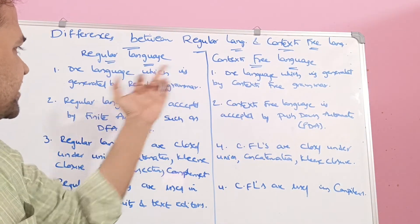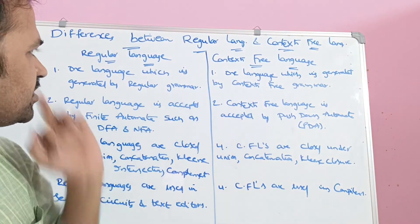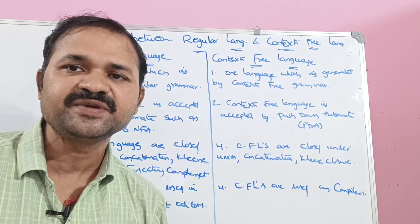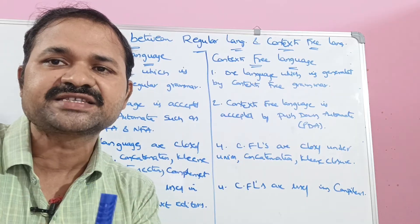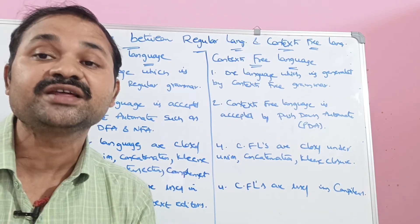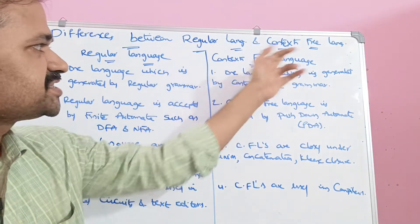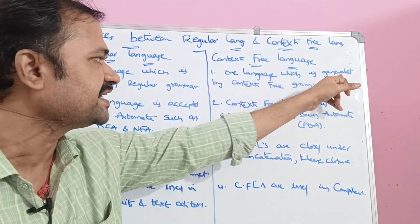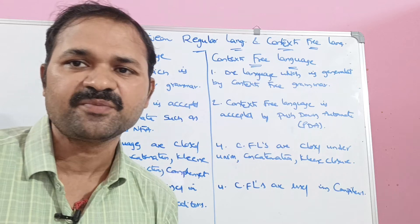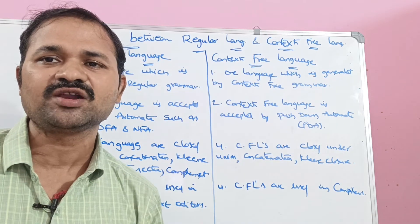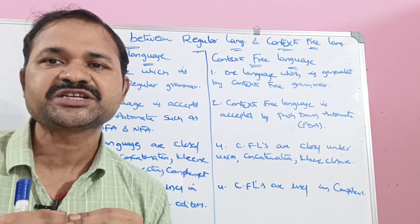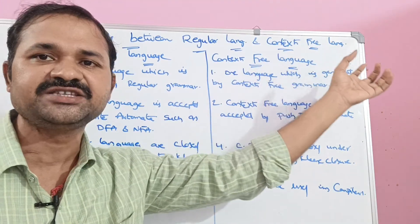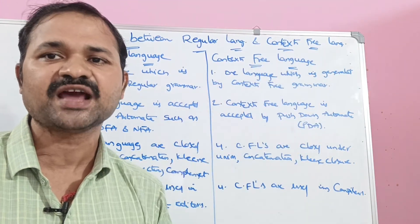The language which is generated by regular grammar is known as regular language. Regular language is generated by regular grammar. Context-free language is generated by context-free grammar, in short CFG.